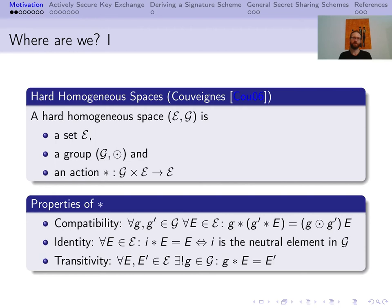First, we have compatibility. That is, if we take two elements G and G' from G and an arbitrary element of E, it does not matter whether we first apply G' and then G to E, or if we first combine G and G' and then apply them to E. Second, we have the identity property. This means that when we take the identity element of G and combine it with an element of E, it stays unchanged.